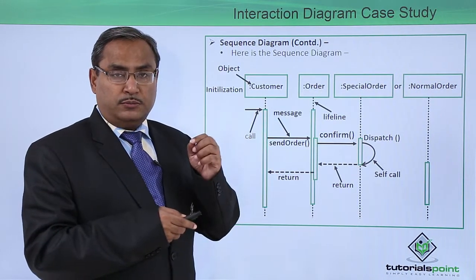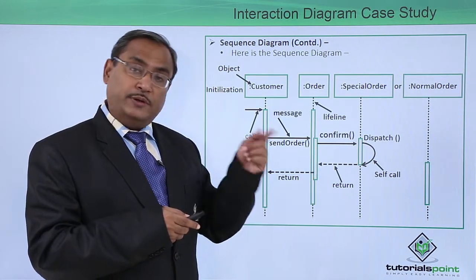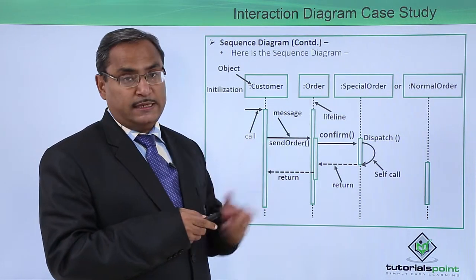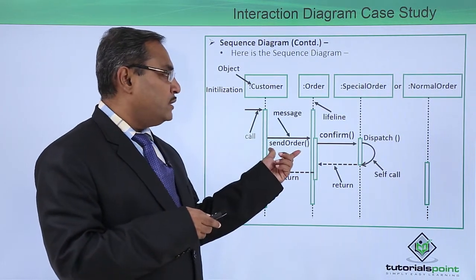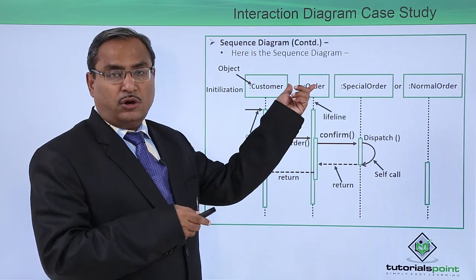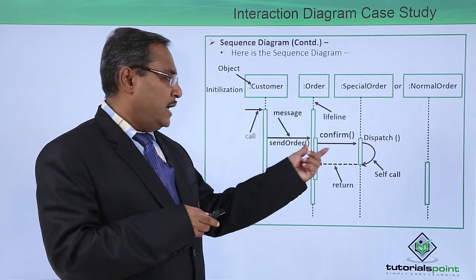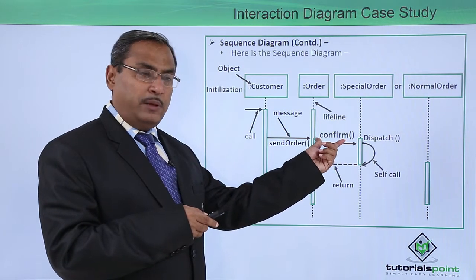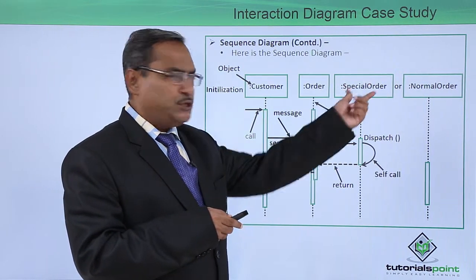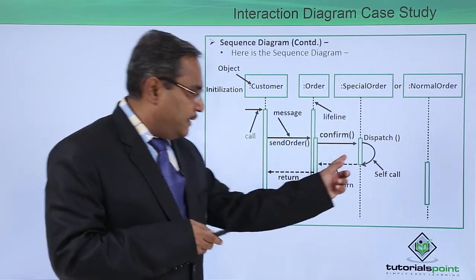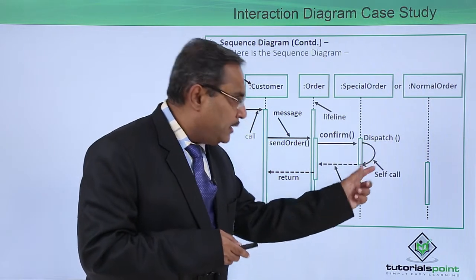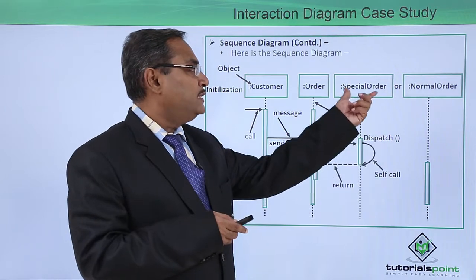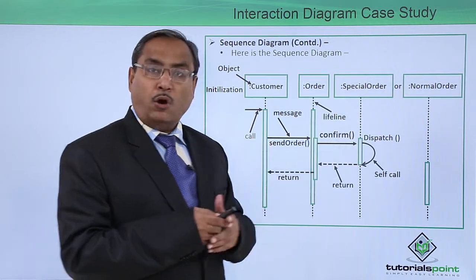The object must be defined under some class, and in that class this particular method must exist. That is why send order should be one of the methods of the order object, confirm should be one of the methods of the special order object, and dispatch is also a method of the special order object.